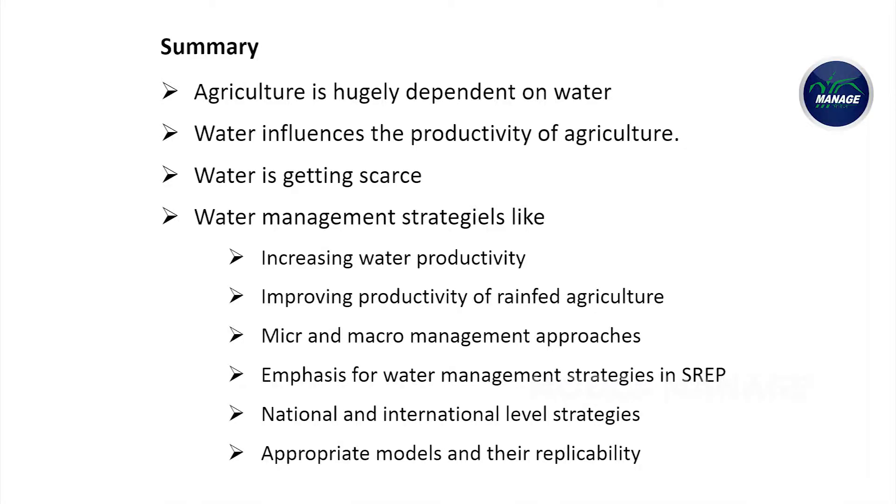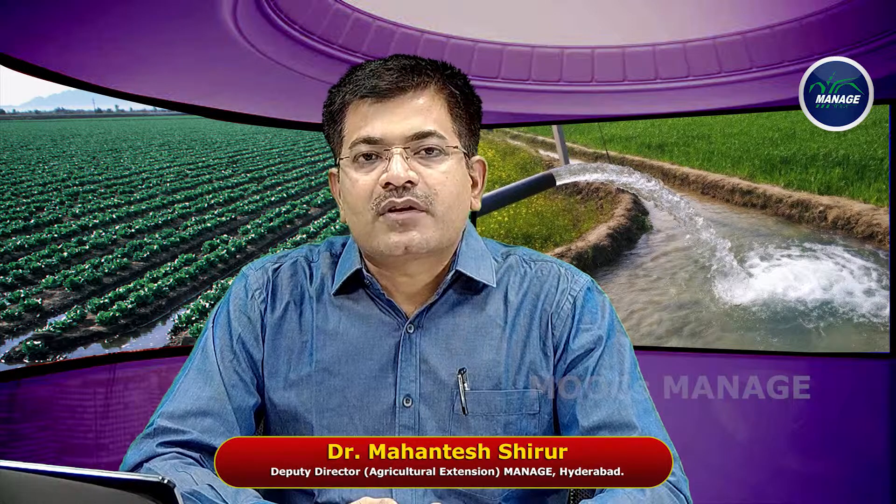In summary, agriculture is hugely dependent on water and we must protect and conserve water to improve agriculture productivity. The efficiency and allocation of water must be judiciously managed. The water management strategies discussed — increasing water productivity, improving the productivity of rain-fed farming, farm-level policies, using the SREP model to promote good practices, and focusing on national and international policies — all play an important role in the overall water management in agriculture.